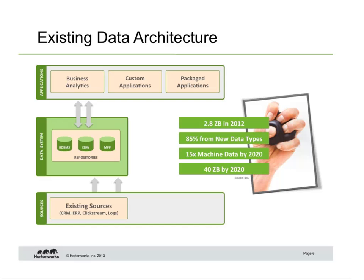This is a stack that almost every organization has. The thing is that there is a lot of pressure on that particular architecture, and it comes from data — a lot of new data. We sit at something like 2.8 zettabytes of data in 2012, but there's going to be tremendous growth. A lot of it is going to come from what we call new data types — not new kinds of data per se, but new data types that organizations want to take advantage of and exploit for new kinds of opportunity.